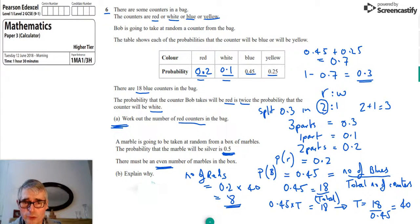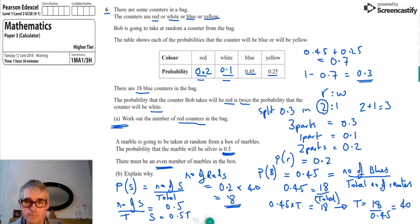Well, again, using similar logic to before, we can say the probability of getting a silver is equal to the number of silvers over the total. And since we're told that that's equal to 0.5, so the number of silvers over the total is equal to 0.5. And if we rearrange that, we would get that the silvers is equal to 0.5 times T. And if we divide both sides by 0.5, we actually get that T is equal to 2 times the number of silvers.